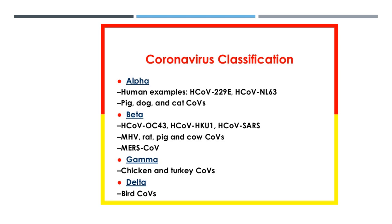Coronaviruses are large, enveloped, positive-strand RNA viruses that can be divided into four genera — alpha, beta, delta, and gamma — of which alpha and beta coronaviruses are known to infect humans. The differences between these genera likely depend on the presence in the lower respiratory tract of angiotensin-converting enzyme 2 and dipeptidyl peptidase 4, which are the main human receptors of the surface glycoprotein S of MERS-CoV and SARS-CoV, which further deserves more research and investigation.